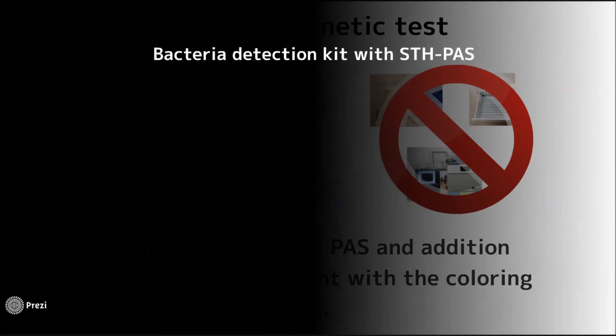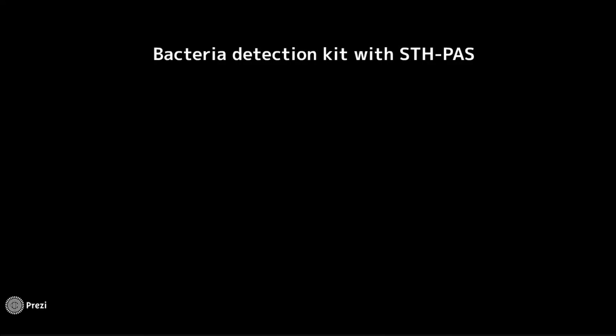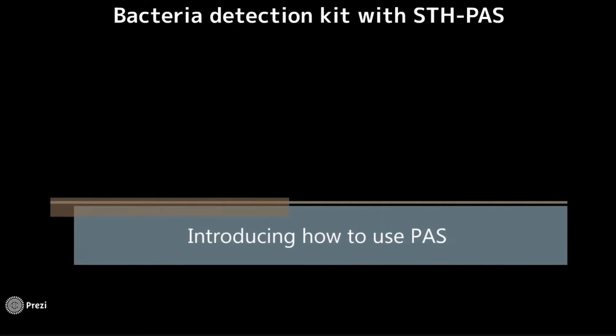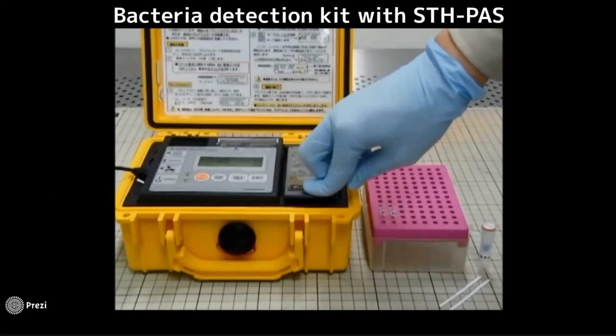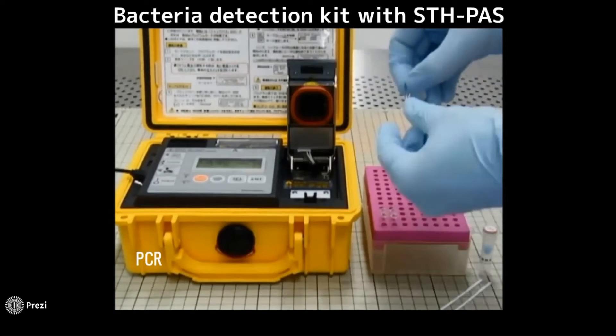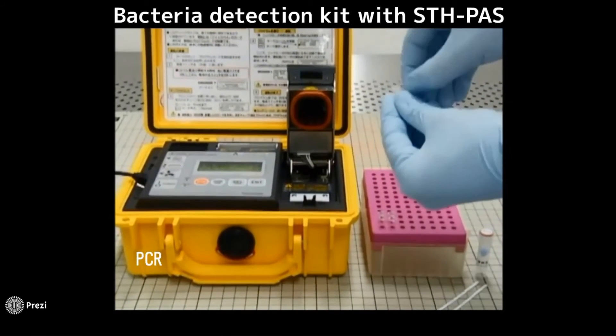Please watch the instructions for using STH Pass, which are in the kit for examining meat bacteria. The two inspection samples in the tubes are mixed with STH reagent and amplified by the PCR equipment.